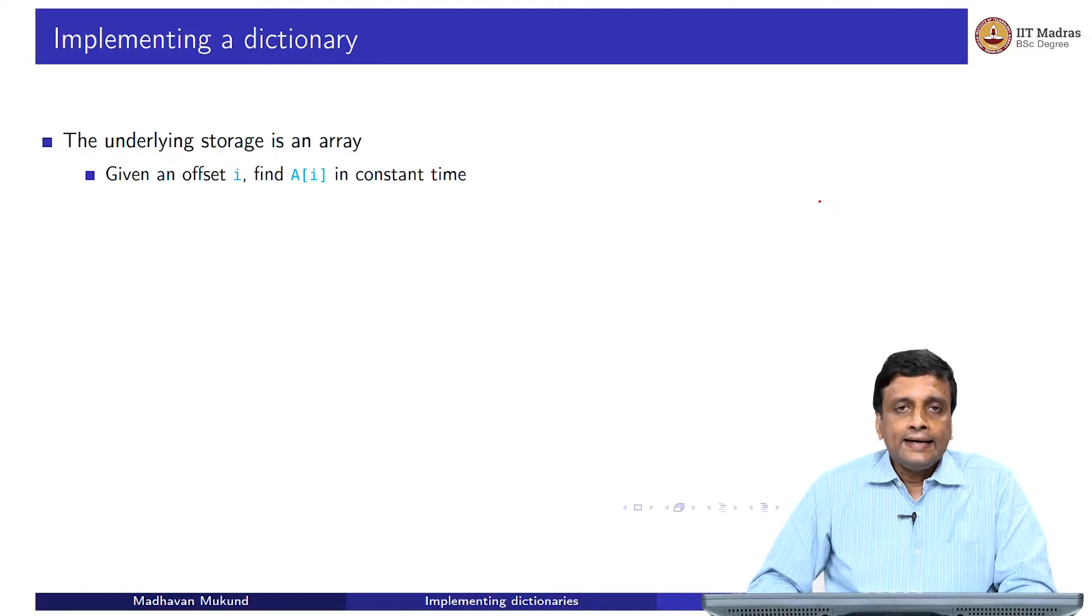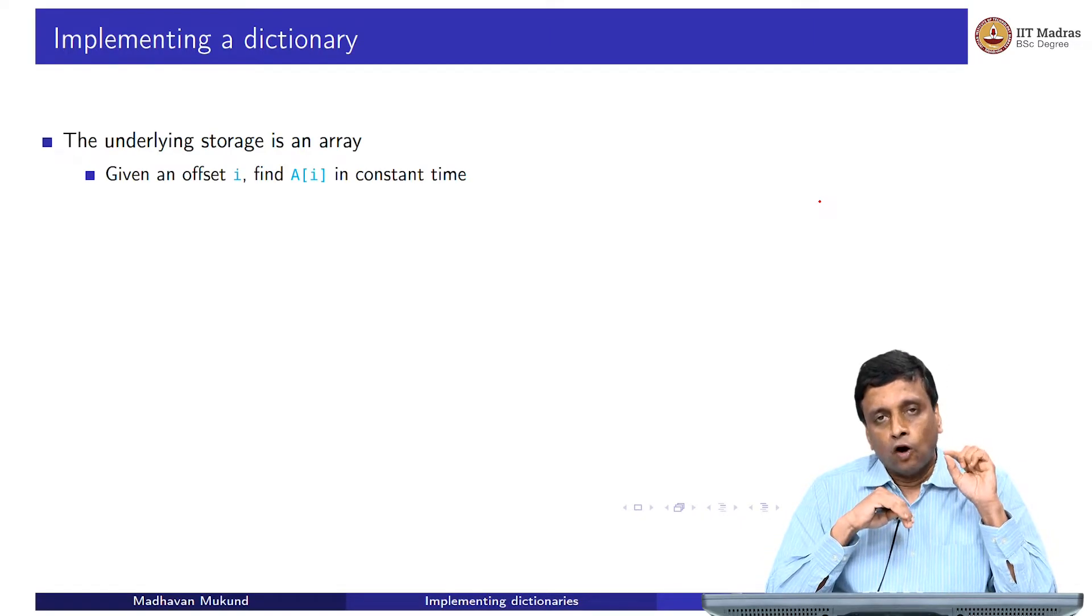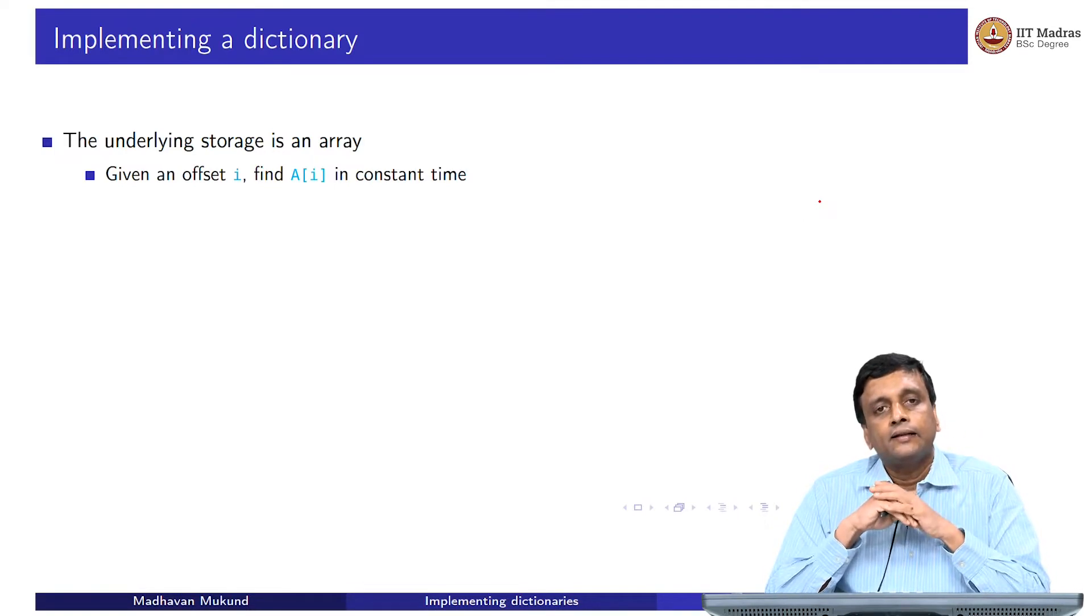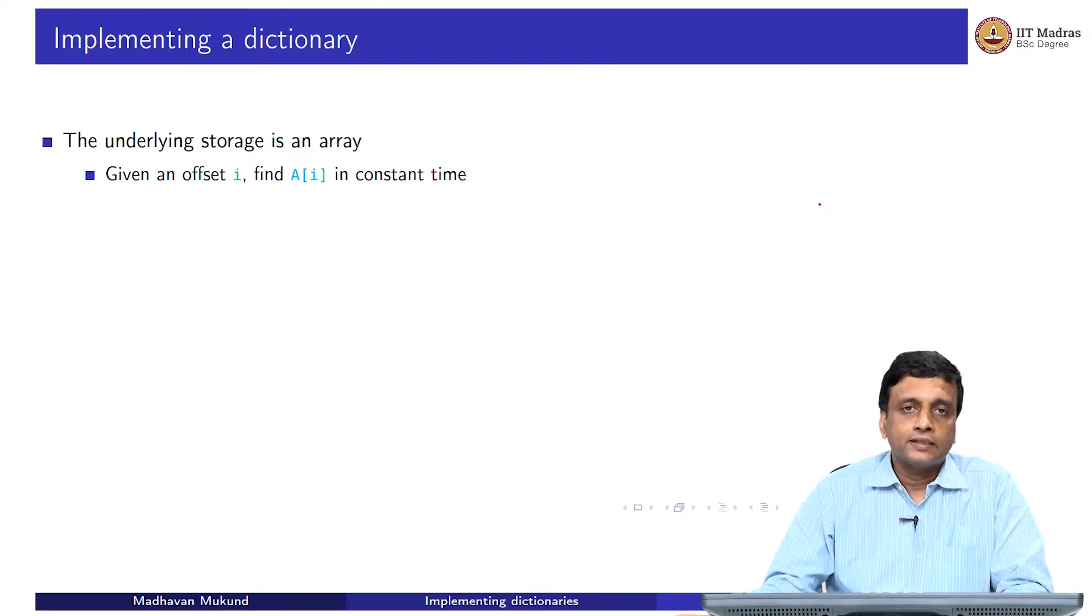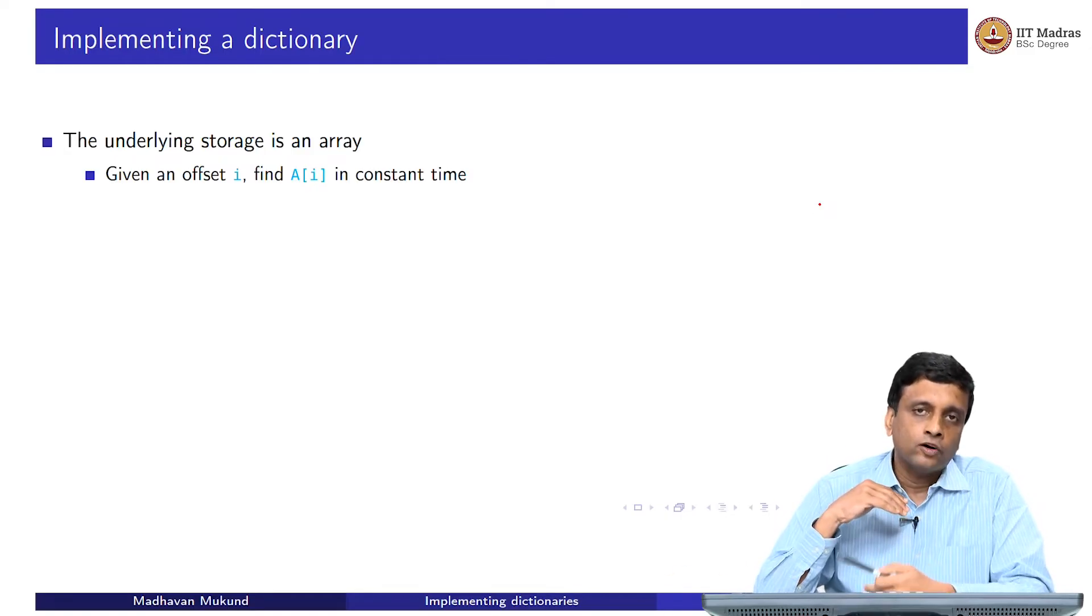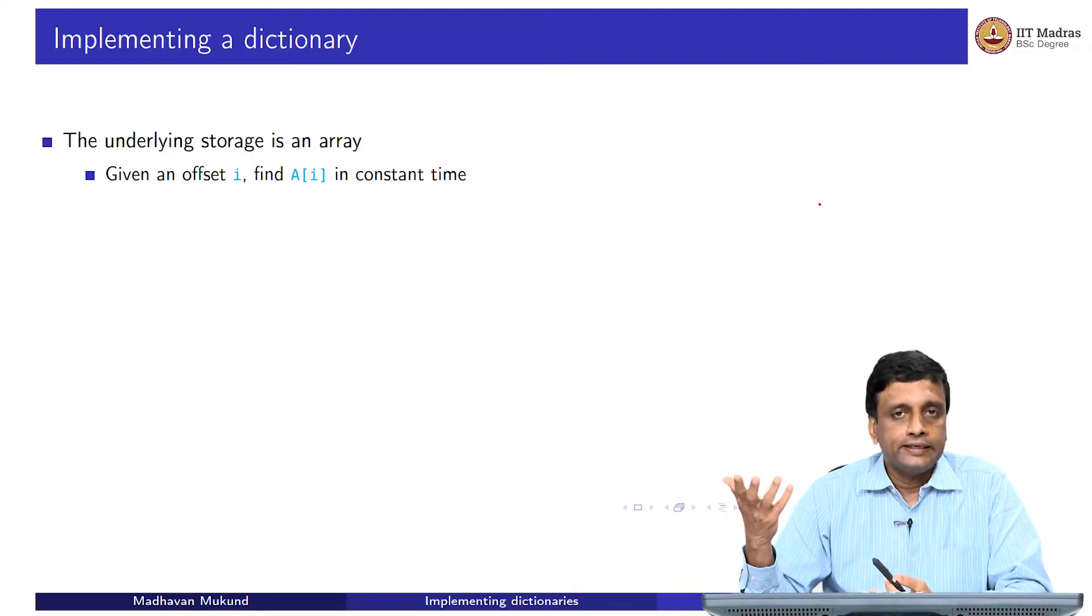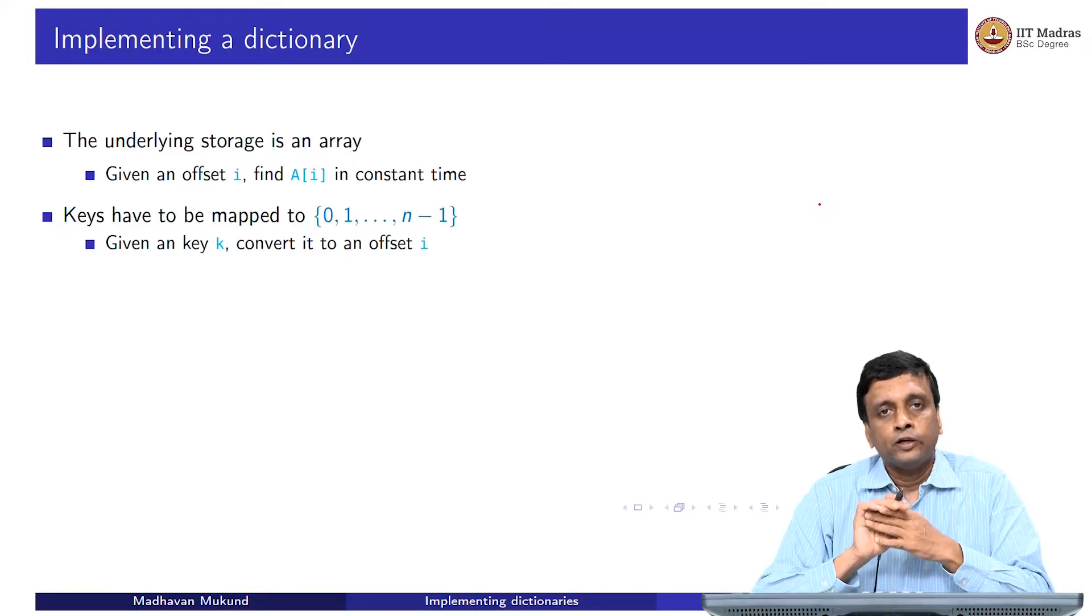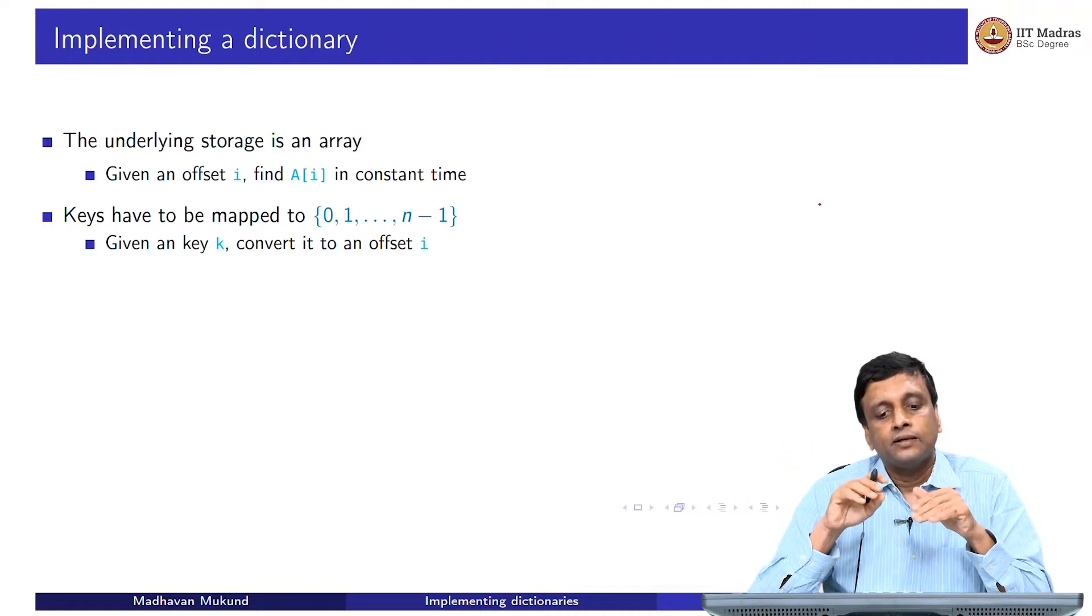The question we want to know is how is such a dictionary implemented? We know that an array is the way to get random access memory. In an array, we have a contiguous block and we can get the offset of position i by looking at the first block and multiplying it by i times the size of the data entry and getting the ith block in constant time. The underlying principle of any random access structure has to be this idea that you have a contiguous block and you can navigate an offset within the block. But our problem is that we want to not use the 0 to n-1 as our entries, but we want to use these keys. We need a way to convert these keys into 0 to n-1.